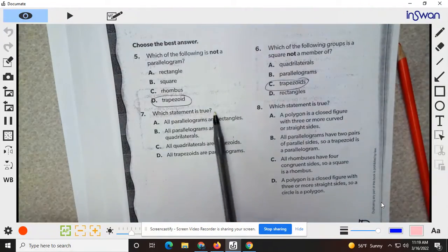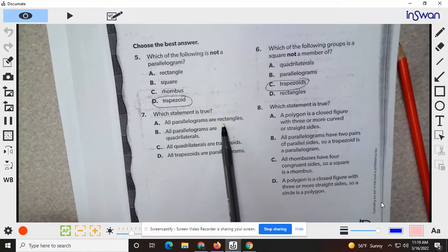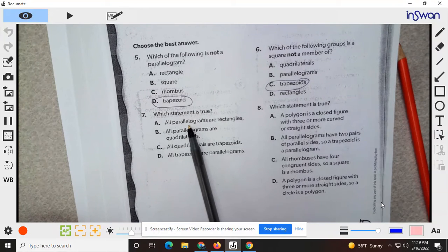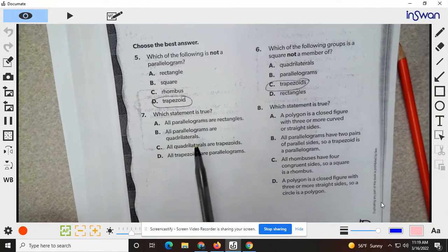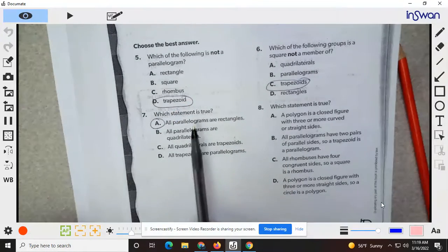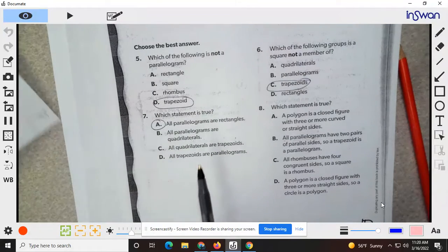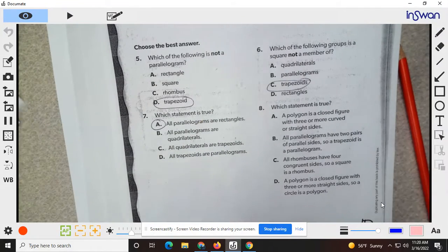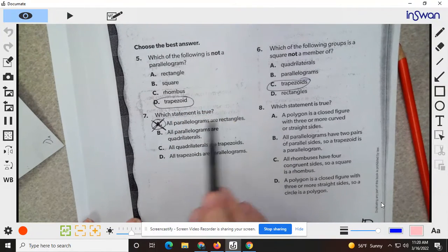Which statement is true? A parallelogram. All parallelograms are rectangles. If you can even draw one parallelogram that is not a rectangle, then that would be the case, and in this case it is because parallelograms do not need to have right angles. Wait, oh, sorry. I'm working that one off. They don't need it, they have to have it.